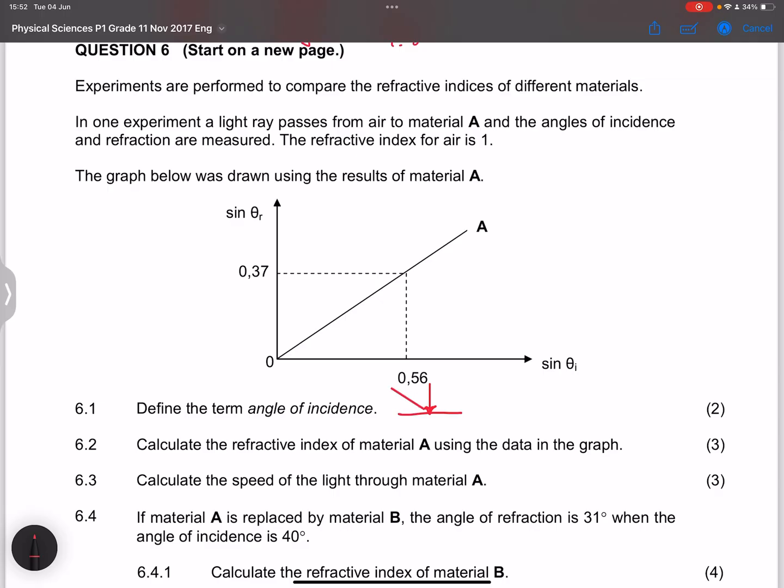So that would be the incident ray over there. So you are looking at the normal being 90 degrees to the refractive surface and the incident ray. Please remember that.